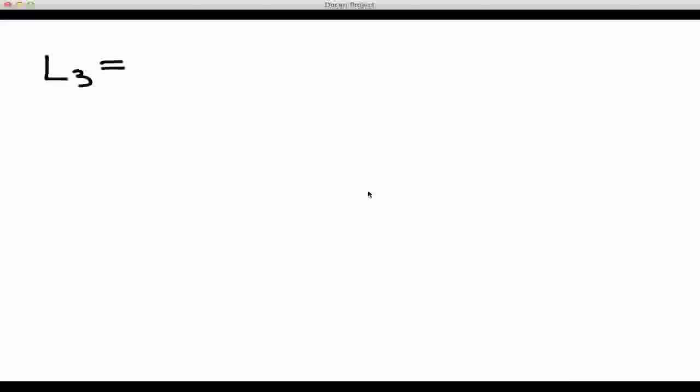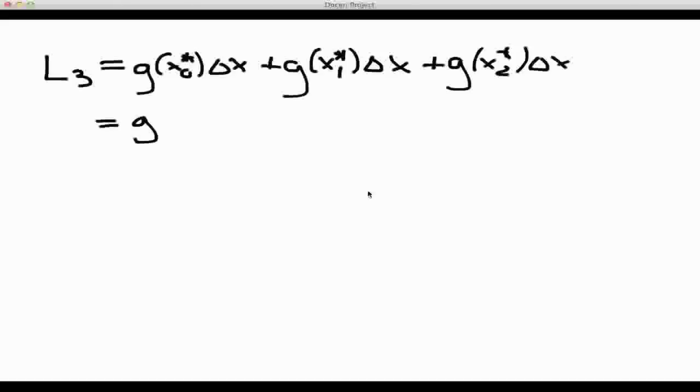L3 is just going to be the sum of the areas that we have here. That's going to be the height of the first rectangle, g of x0 star times delta x, plus the height of the second rectangle, g of x1 star times delta x, plus g of x2 star times delta x. We've made some of these calculations already. This is g of 0, all the delta x's equal 2, so I'm going to write that in times 2, plus g of the x1 star value, which was 2. The base width of that rectangle is 2 as well. The third and final endpoint was equal to 4, and I'm again multiplying that by 2.